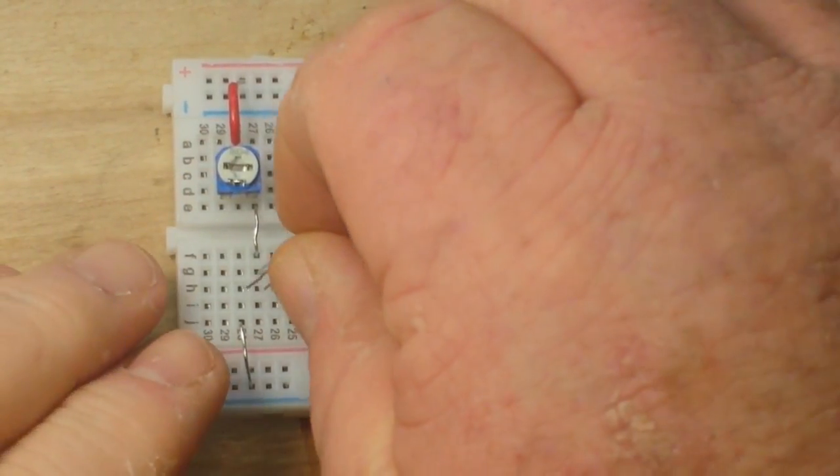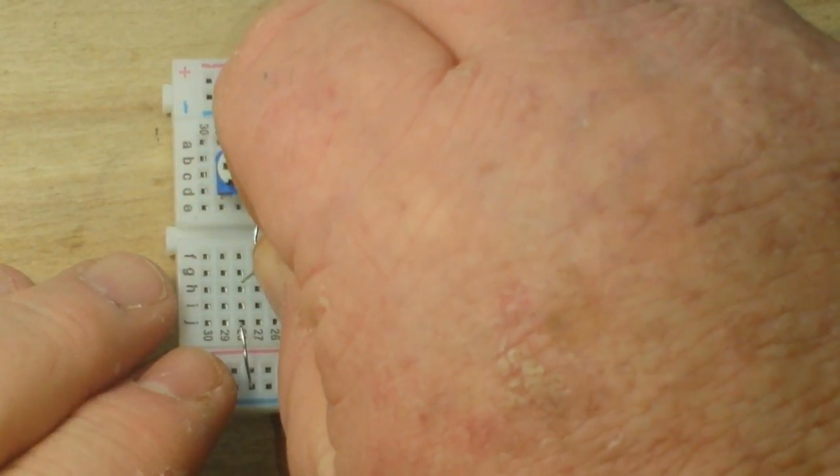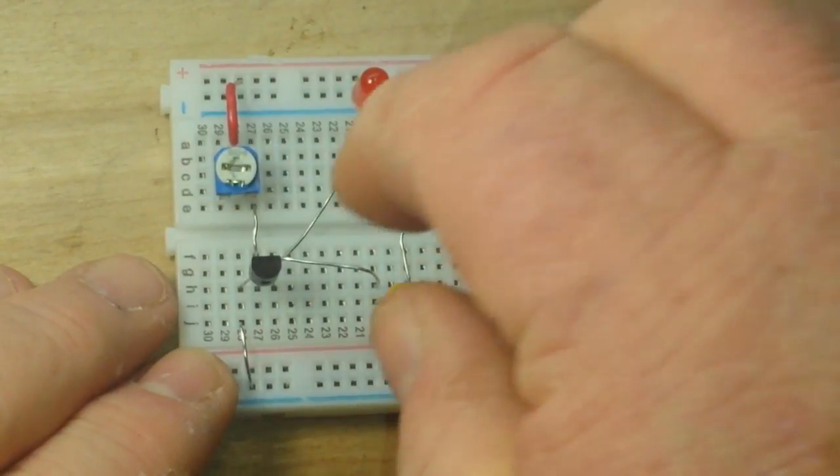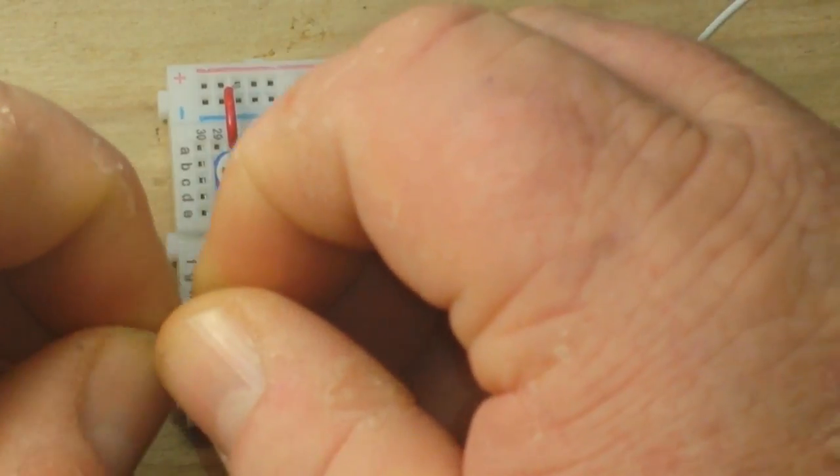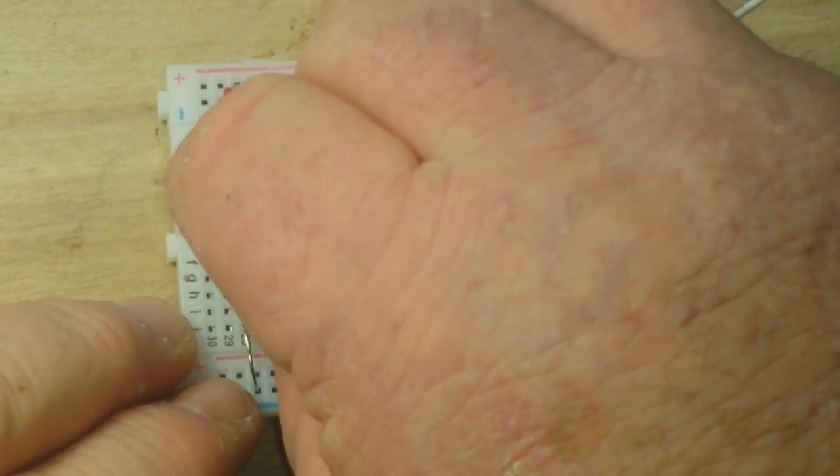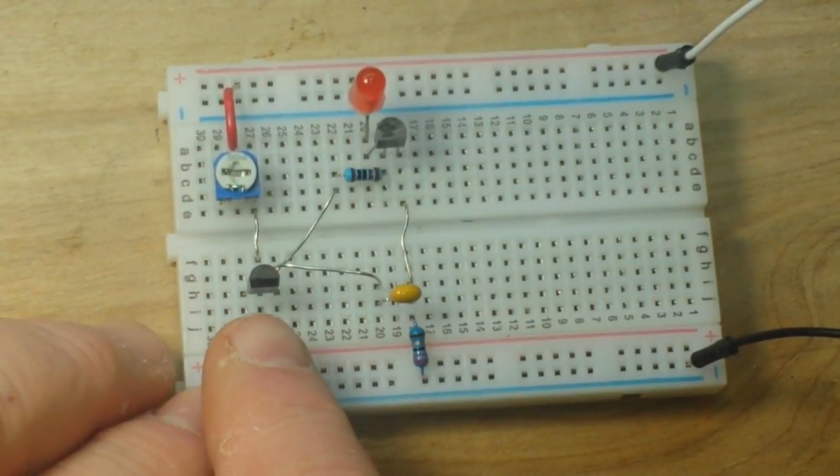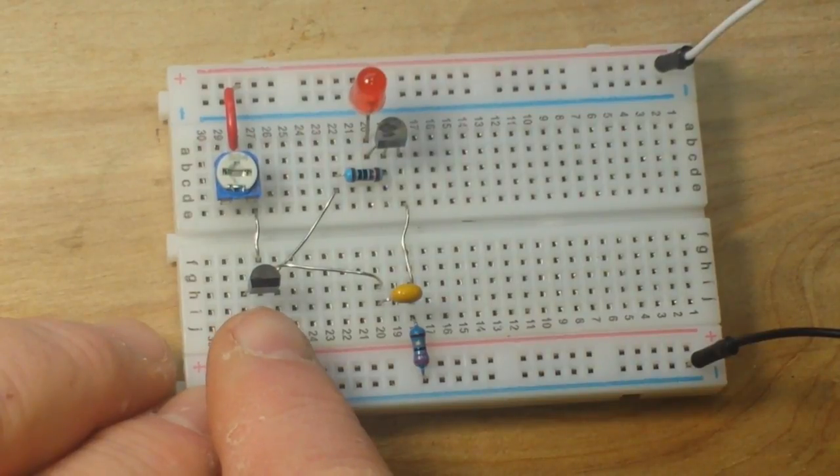Also, if I put our NPN transistor in backwards, it does work. So, if you try and put a PNP or a bad NPN in here, it won't work.